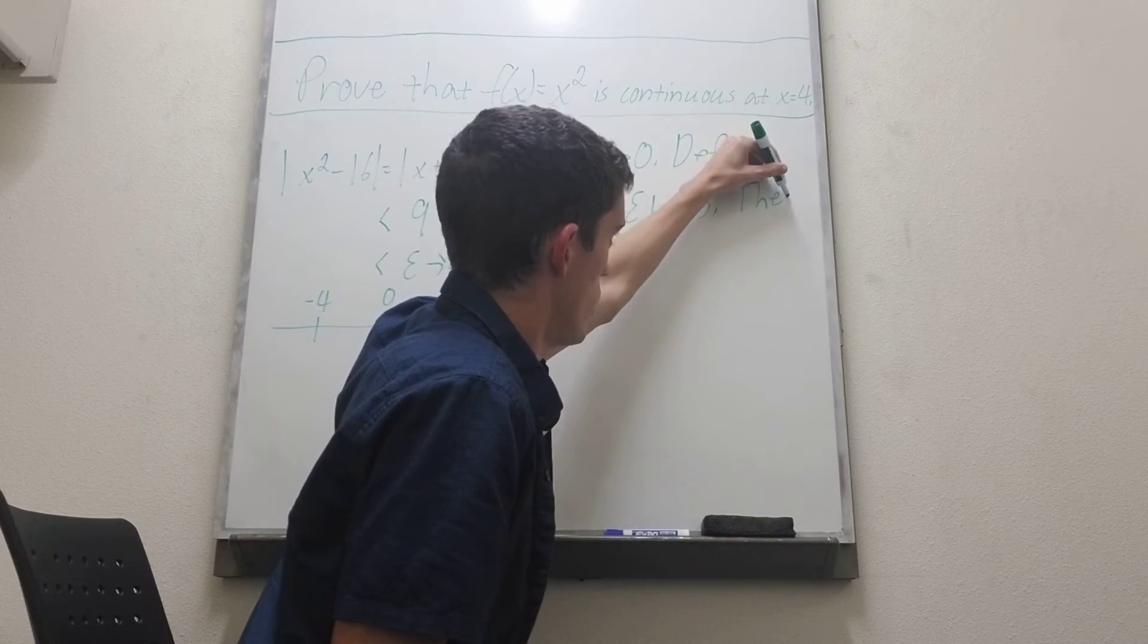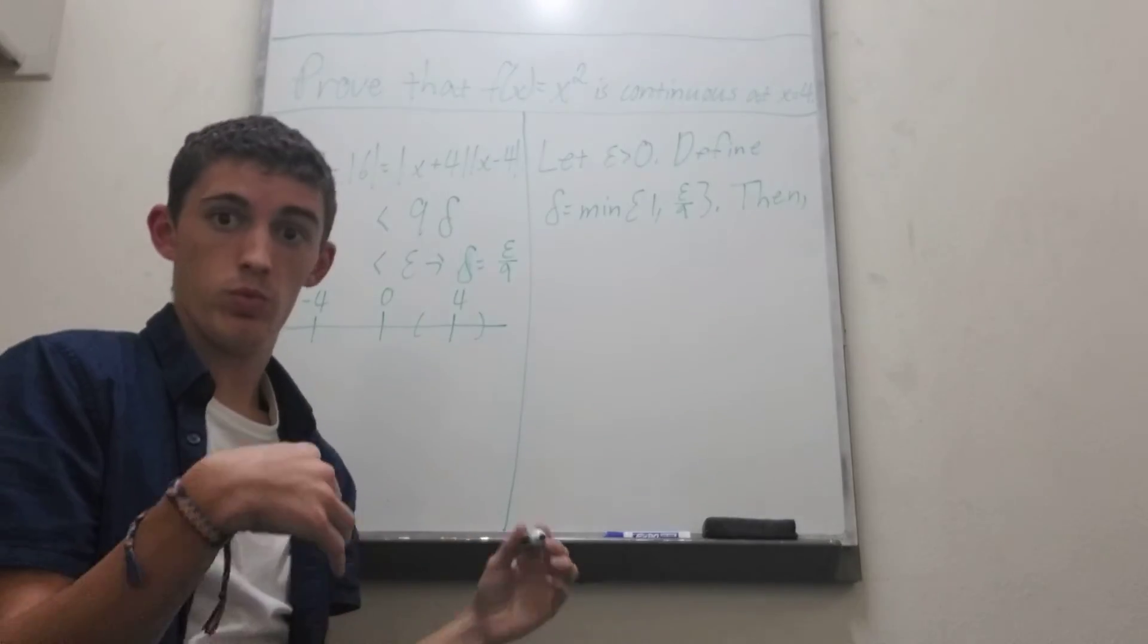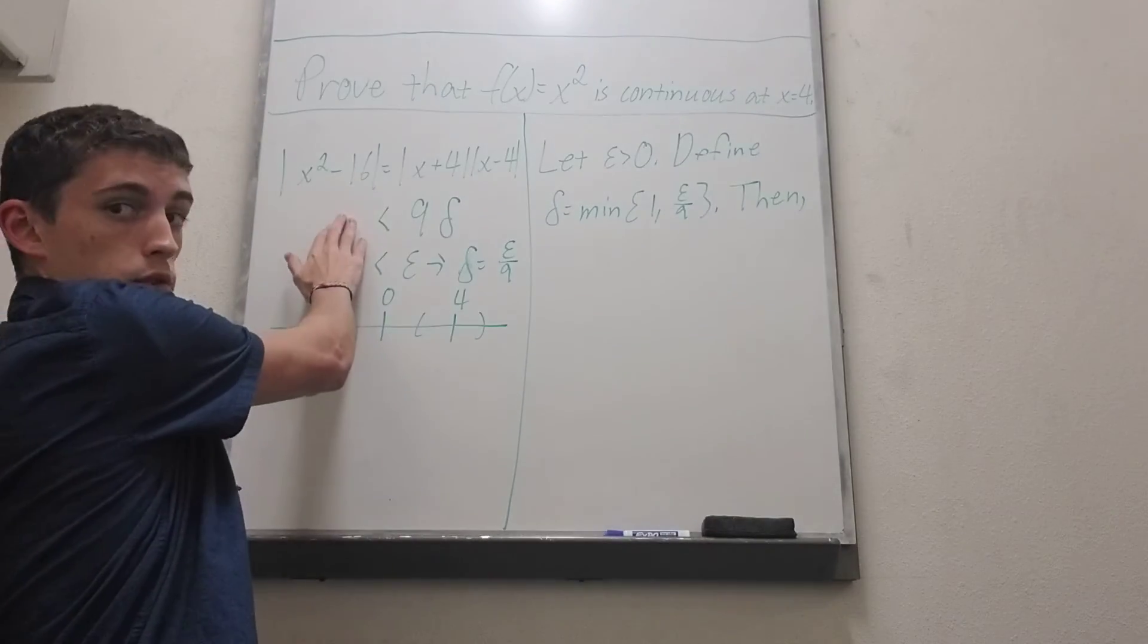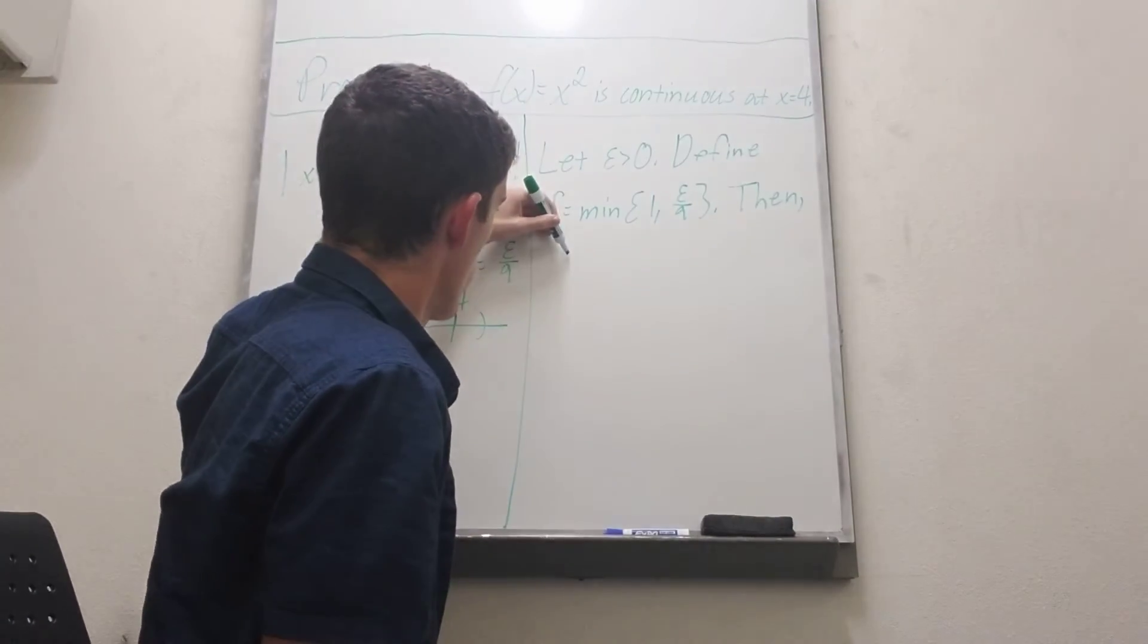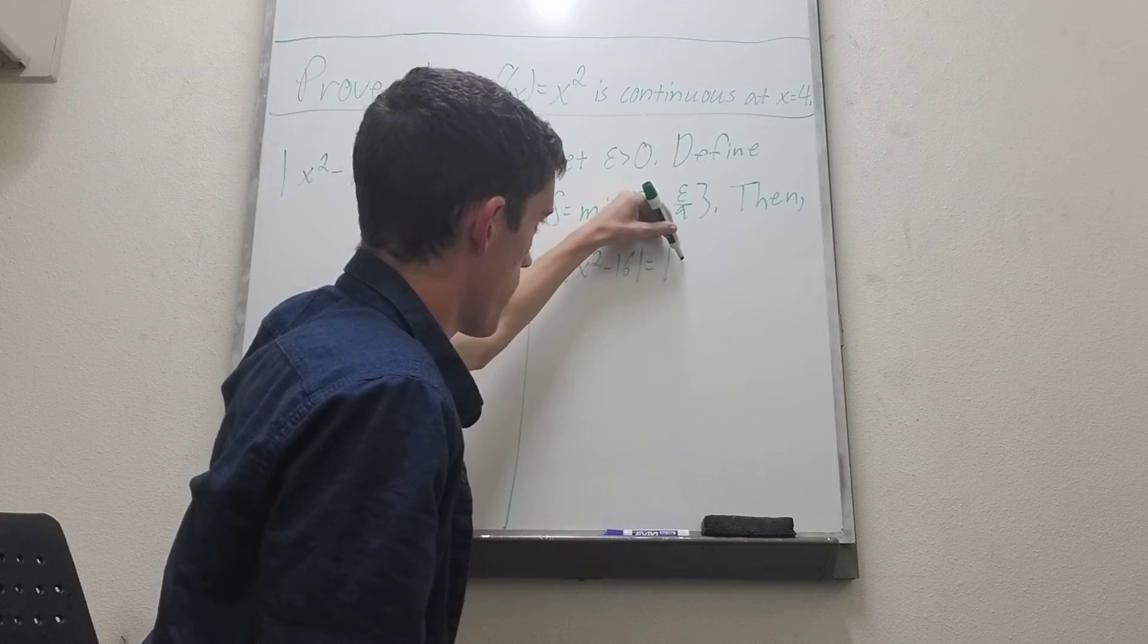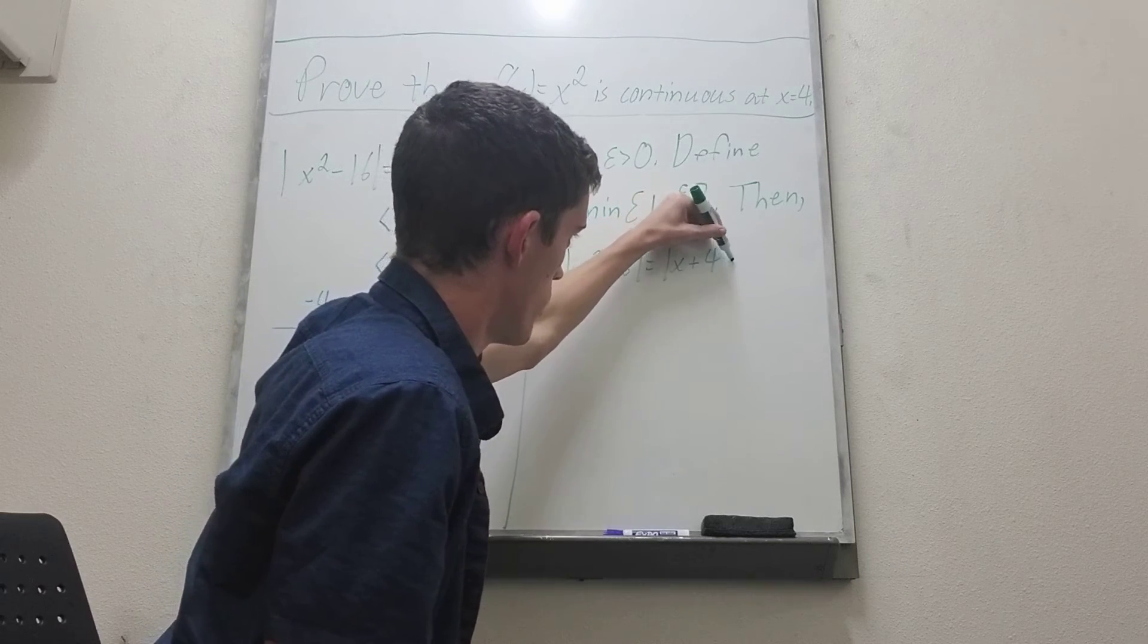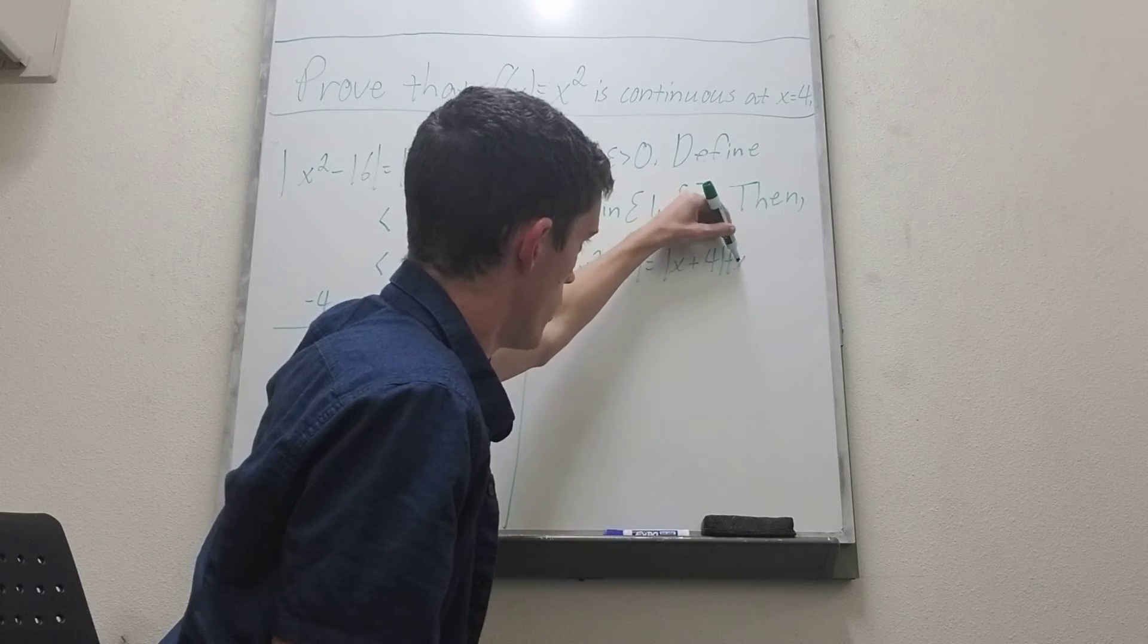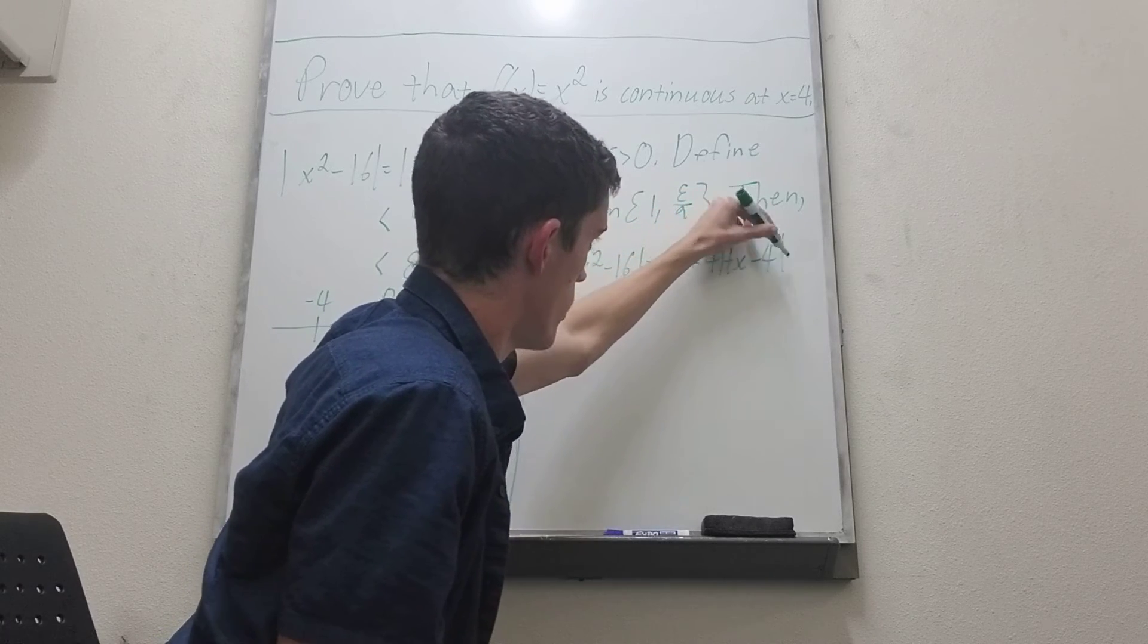So then we can now do pretty much the same thing that we have over here. So when we have x squared minus 16 we factor that exactly like before.